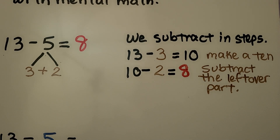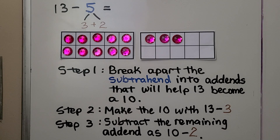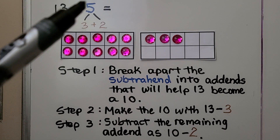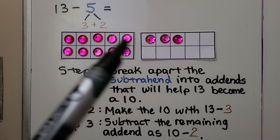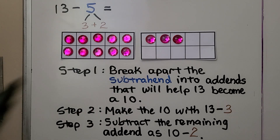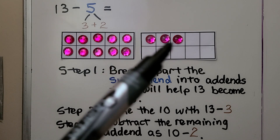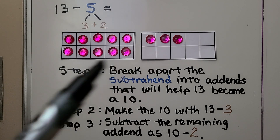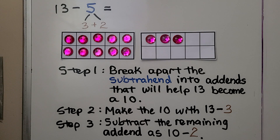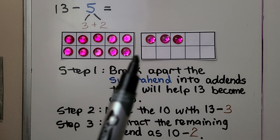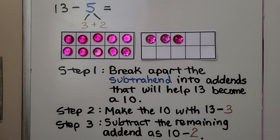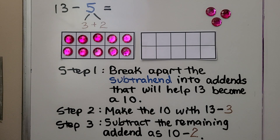It gives us 8. Here are the steps: we have 13 minus 5. Here we have 13 gems and we need to take 5 of them away. We break apart this subtrahend into 3 plus 2 more — we break apart the subtrahend into addends that will help 13 become a 10. So we take these three away and now we've made the 10.